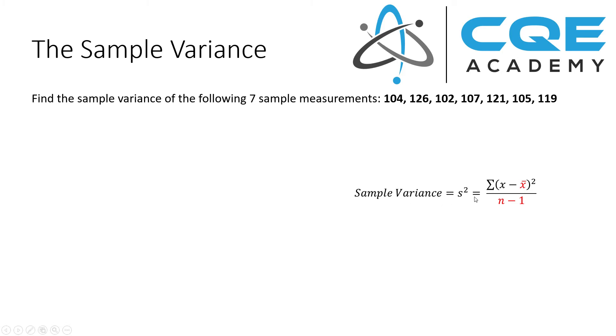Before we can calculate the sample variance, we need to calculate the sample mean value. To calculate the sample mean or x bar, we're going to take the sum of all of our individual measurements, the sum of x, and divide by n, which is the number of samples. We take all of our seven sample values and divide by seven. So 784 divided by seven is 112.